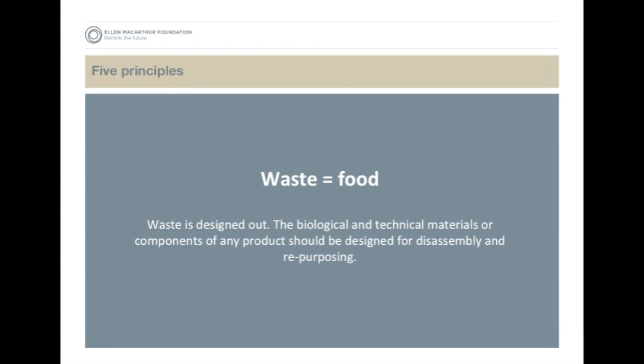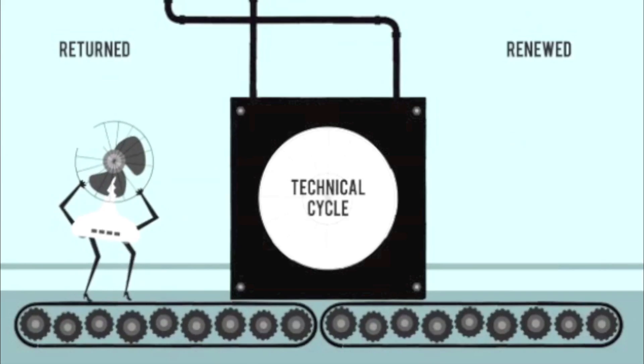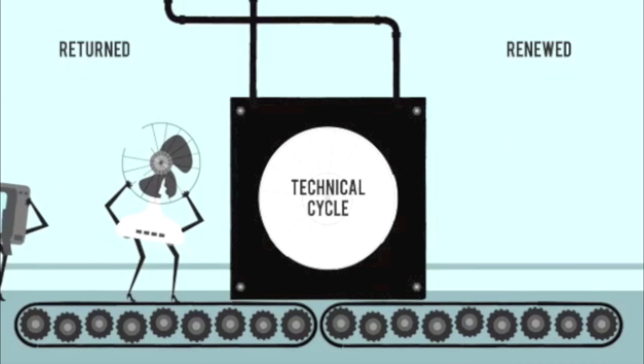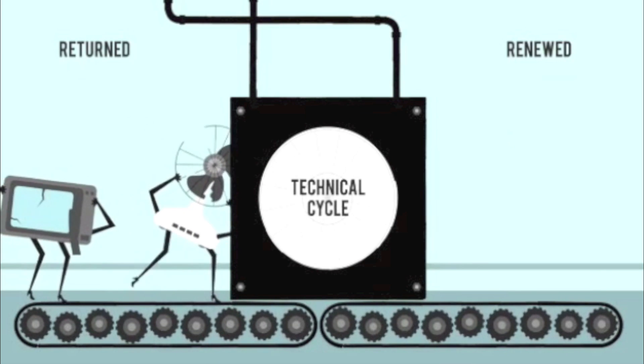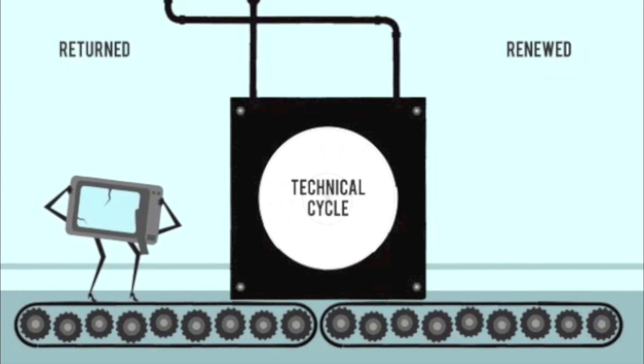The first is that waste is food. We design things by intention to be value in another cycle. We completely eliminate waste by intention. In the technical cycle, we look at how we can design products that are made to be remanufactured, refurbished, and designed for disassembly.